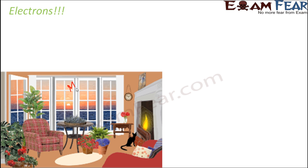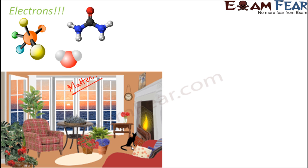Anything that we see around us is matter. Matter is something that occupies some space. For example, if you look at this chair, this chair occupies some space, even though it is a non-living object. Similarly, the cat also occupies some space and it is a living object. So all of these are examples of matter. Now, matter is made up of molecules.